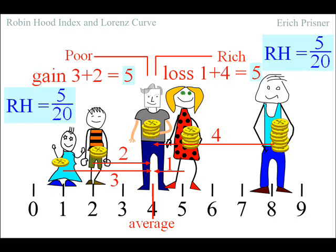Therefore the Robin Hood index can be calculated in two ways. The sum of all differences between average wealth and actual wealth for all poor persons divided by the total wealth of the population. Or the sum of all differences between actual wealth and average wealth for all rich persons divided by the total wealth of the population.